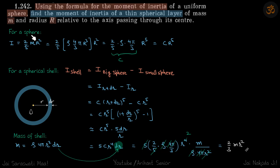Because we are going to use this result for a shell, let's get it in terms of rho, assuming the sphere and the shell are made of the same material. So let's get rid of capital m and introduce rho: m is rho times 4/3 pi r cubed, which simplifies, and since it's a big constant, let's call it c. So the moment of inertia is c times r to the power 5.